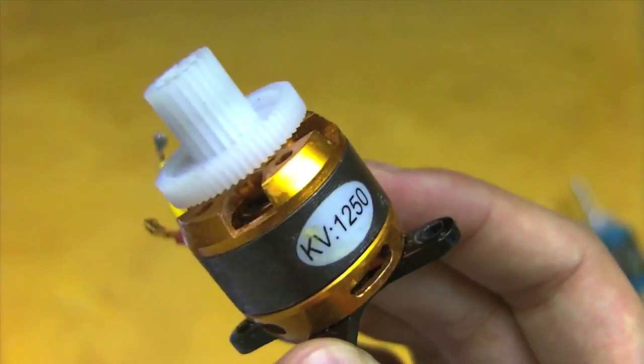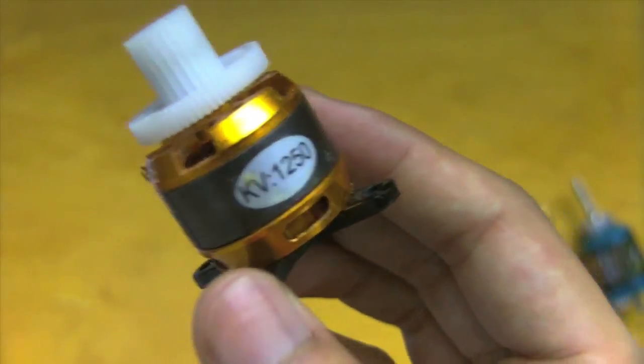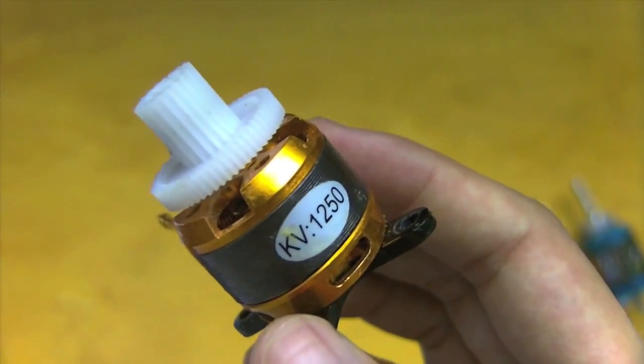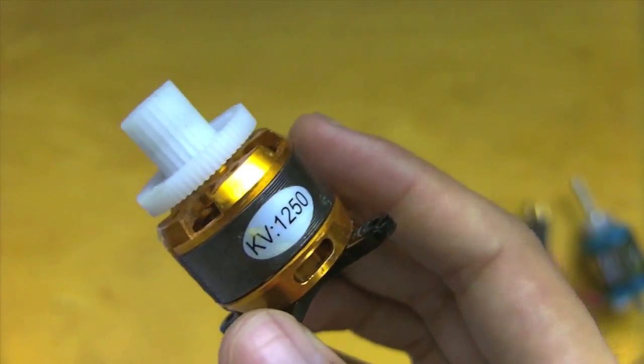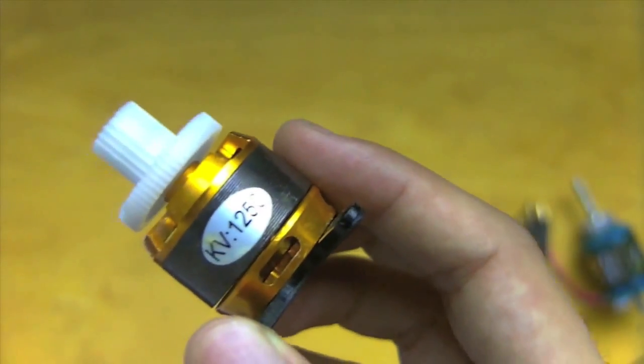I'm not sure how accurate this value is, though, but you could test it by hooking it up to some sort of meter that could read revolutions per minute. Also, as a general rule, the lower the KV value, the higher the torque. Out-runners, like this one, have much lower KV values than in-runners.